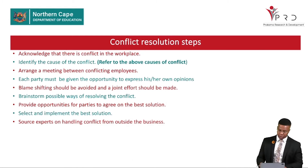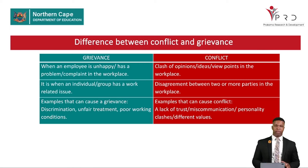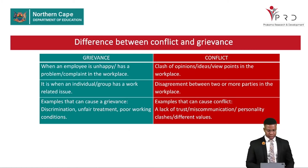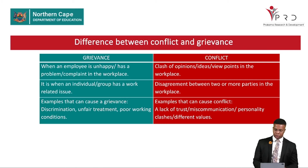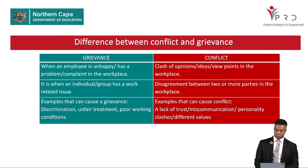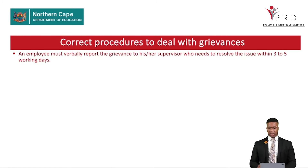The difference between conflict and grievance: grievance is when an employee is unhappy and has a problem or complaint in the workplace, while conflict is a clash of opinions, ideas, or viewpoints between two or more parties. Grievance involves an individual or group with a work-related issue; conflict is a disagreement between two or more parties. Examples causing grievance include discrimination, unfair treatment, or poor working conditions; examples causing conflict include lack of trust, miscommunication, personality clashes, or differences in values.